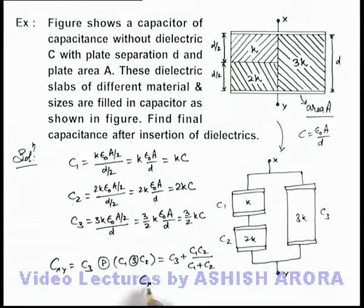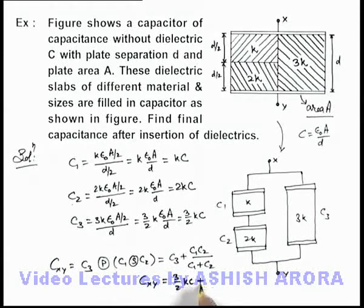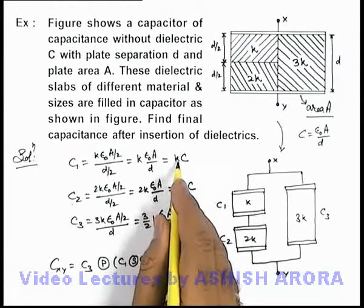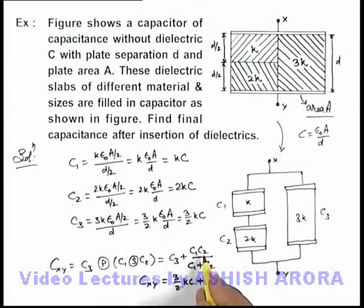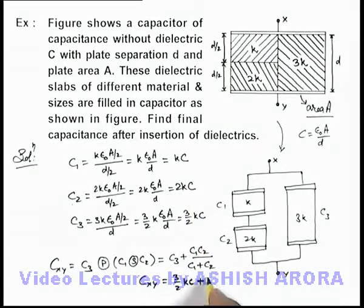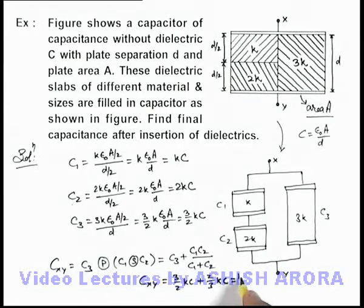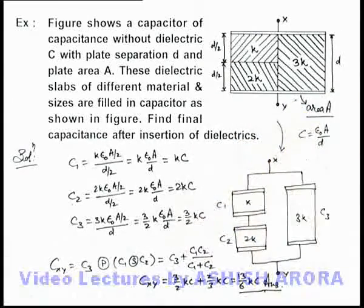The equivalent capacitance C_xy equals 3/2·kC plus, substituting C1 = kC and C2 = 2kC, we get kC × 2kC divided by 3kC, which is 2/3·kC. The resulting value is therefore 13/6·kC. This is the final answer — the capacitance of the capacitor in the situation shown in the figure.